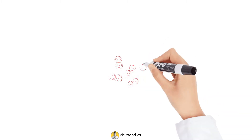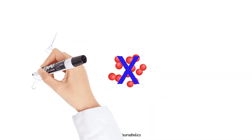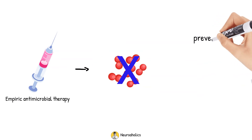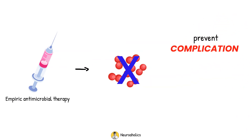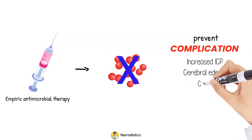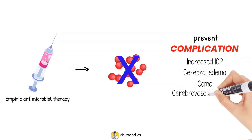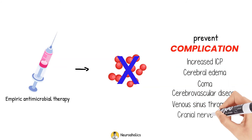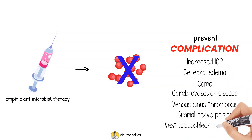The management of bacterial meningitis includes the eradication of the meningeal pathogen with antimicrobial therapy, as well as the prevention, as much as possible, and treatment of the acute complications of this infection. The acute complications of bacterial meningitis are increased intracranial pressure, cerebral edema, coma, ischemic and hemorrhagic cerebrovascular disease, venous sinus thrombosis, cranial nerve palsies, and vestibulocochlear involvement.